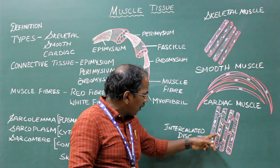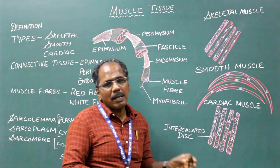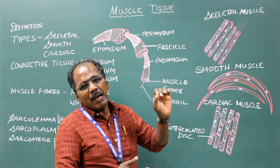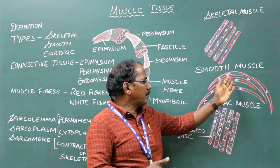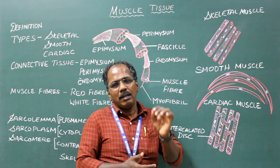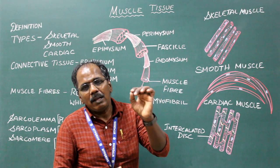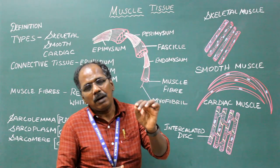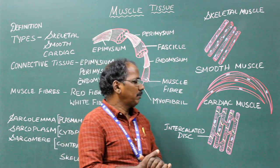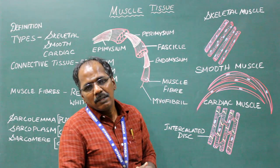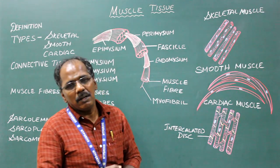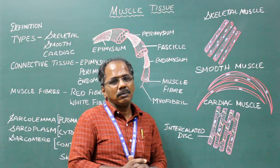Presence of intercalated discs is the characteristic feature of the cardiac muscle. Among these three types of muscles, the neuromuscular junction is present only in the skeletal muscle; it is absent in smooth and cardiac muscle. The neuromuscular junction is the junction between the terminal end of the axon and the sarcolemma of the muscle. The skeletal muscle is also known as voluntary or striated muscle, and the smooth muscle is known as involuntary or non-striated muscle.